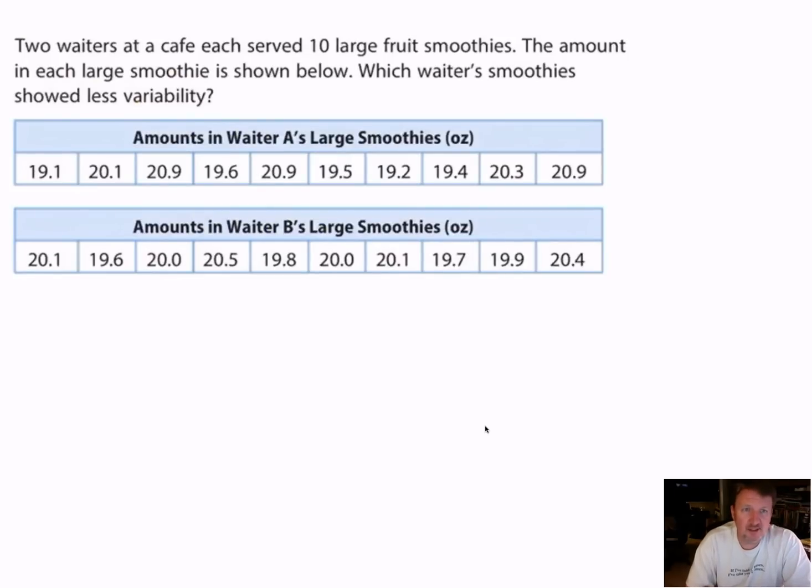So let's look at an example. This is two waiters at a cafe each served ten large fruit smoothies. The amount in each large smoothie is shown below. Which waiter's smoothies showed less variability? Which waiter basically made smoothies that were closer to the average? So he probably wasted less material or gave their customers the money's worth. So the first thing we have to do is I'm going to come up with a mean.